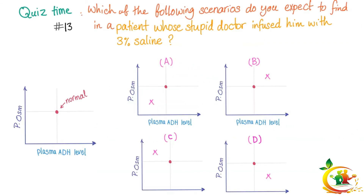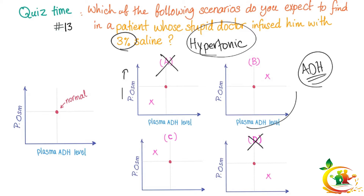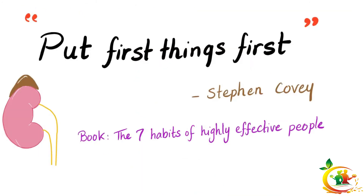First, let me answer the question from the last video: which of the following scenarios do you expect to find in a patient whose doctor infused him with 3% saline? As you know, 3% saline is hypertonic — its osmolality is greater than that of the plasma. So once you infuse this, plasma osmolality has to increase, making A and D wrong. It's either B or C. The most important stimulus for ADH release is hypertonicity, and now we have hypertonicity, so ADH goes up. The answer is B.